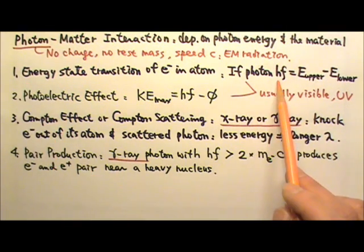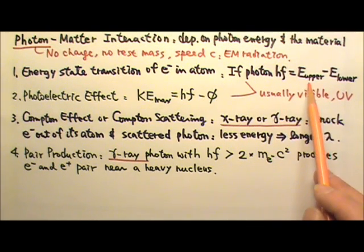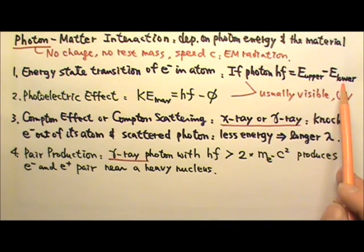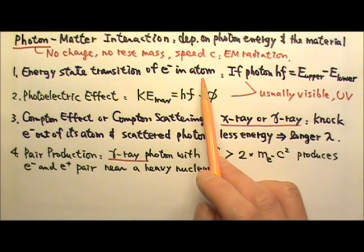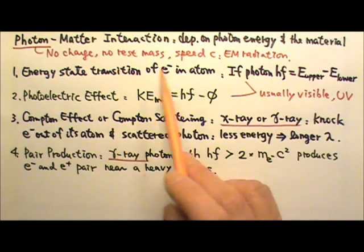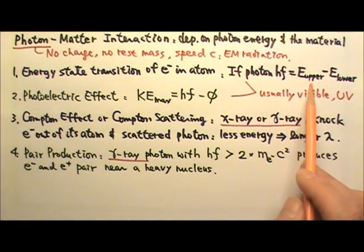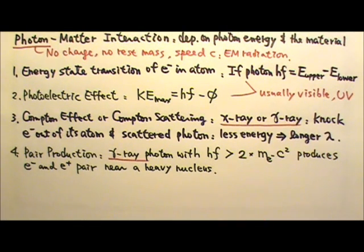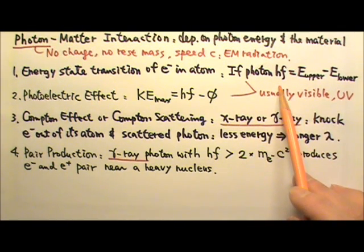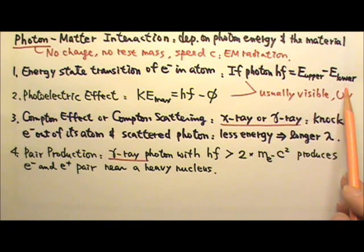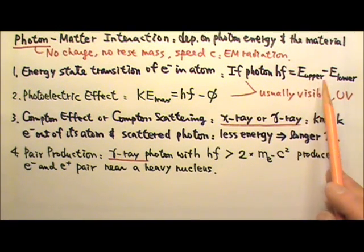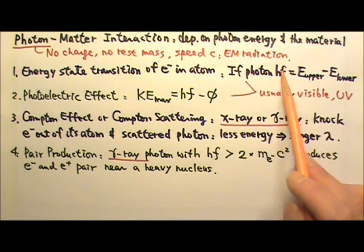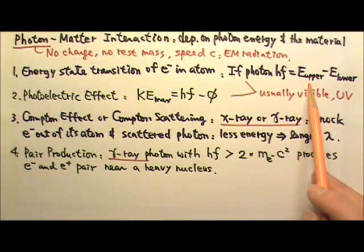One: a photon with the exact amount of energy hf that equals the energy difference between two energy states can cause an electron in an atom or a molecule to transition from the lower energy state to a higher energy state. In this process, the photon disappears and gives all its energy to the electron. The photon energy has to be exactly the difference between the energies for the two states, E upper minus E lower, because at the higher energy state, the electron is still bound by the atom.